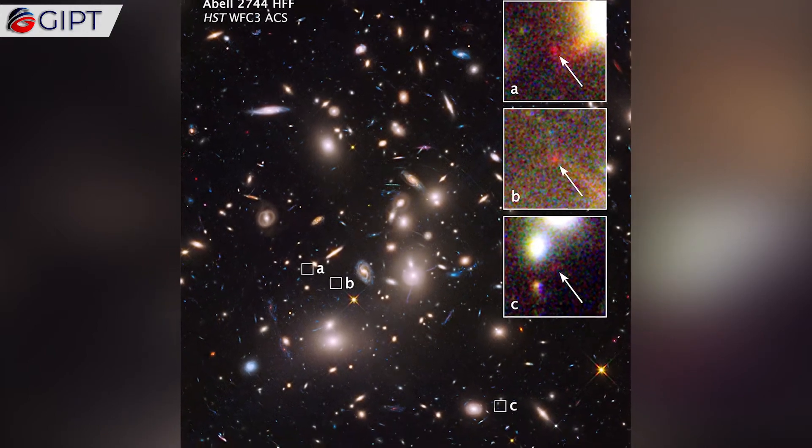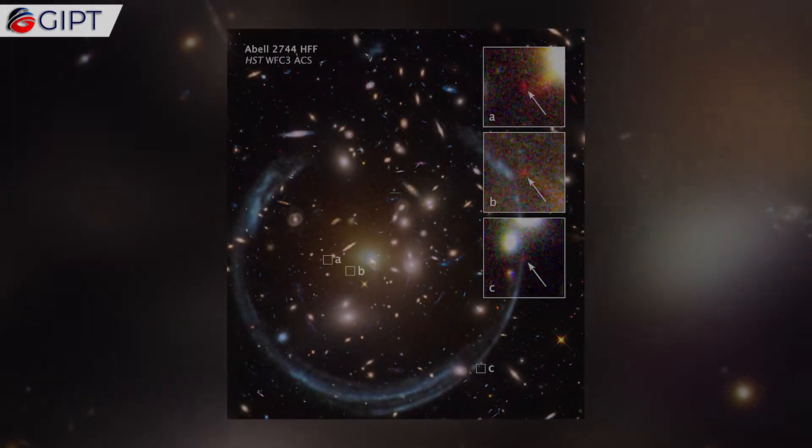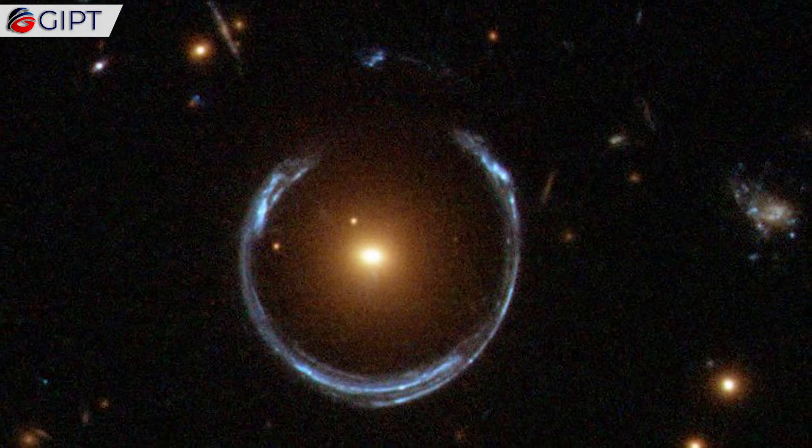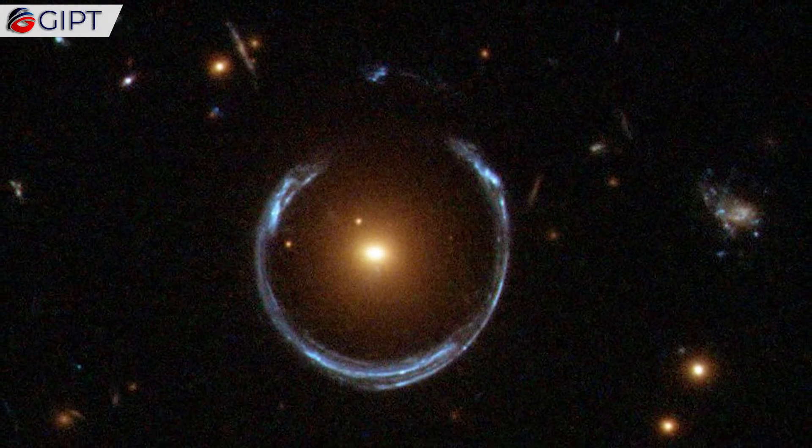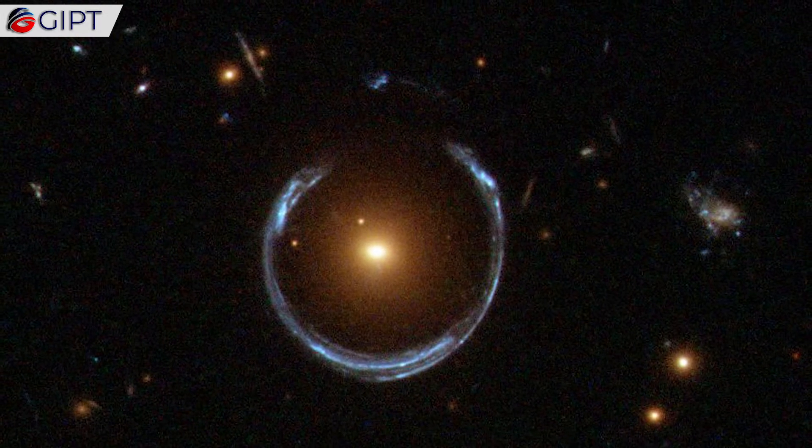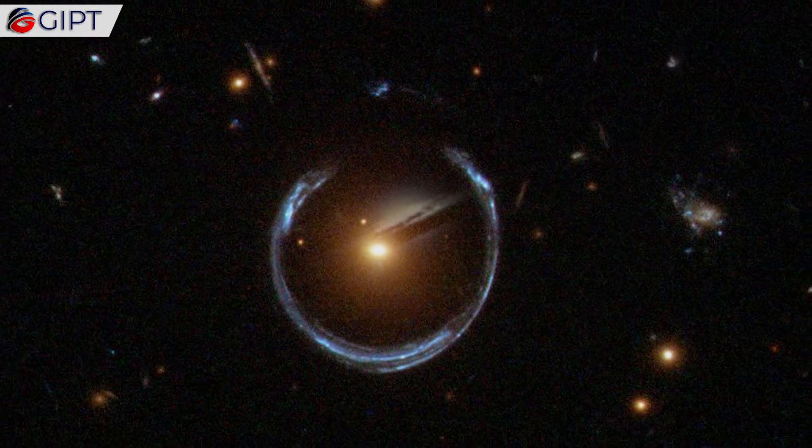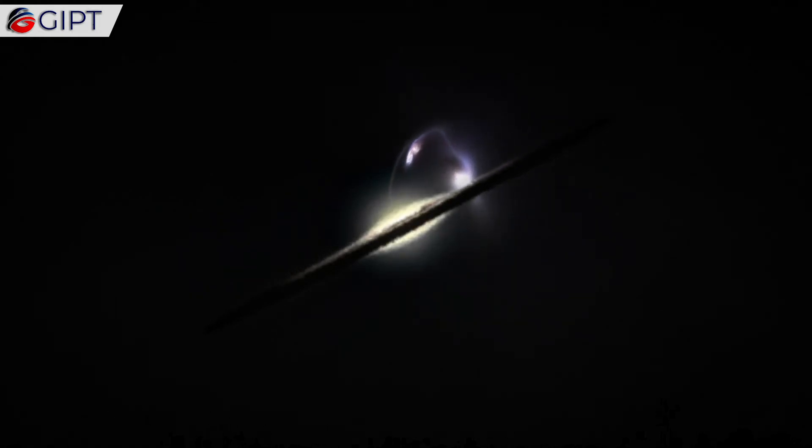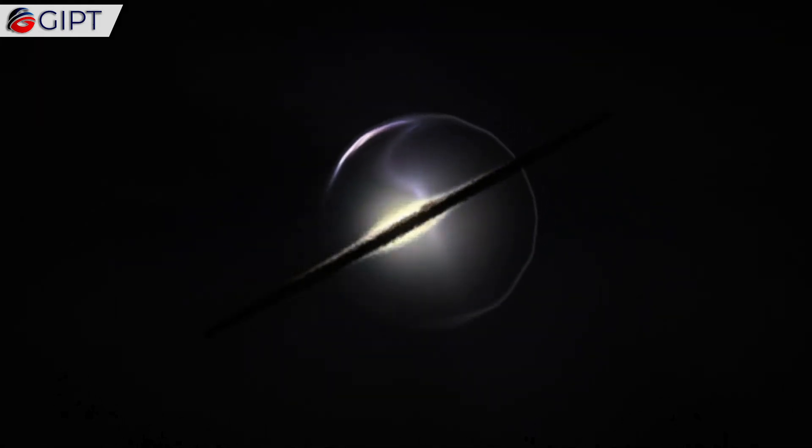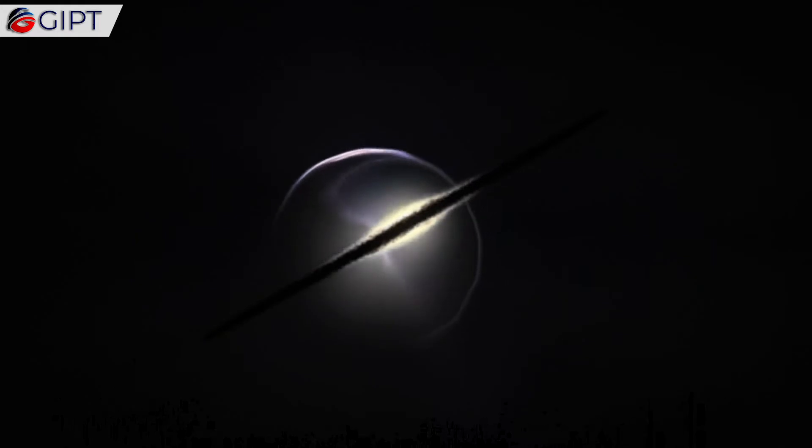But Einstein thought gravitational lensing would be too small to see. He dismissed the idea as mostly useless and didn't bother publishing his findings until a colleague urged him. It was a serious misjudgment on Einstein's part to dismiss the idea, at least initially, considering how important the technique is today. Today we find entire planets, stars, galaxies, clusters, and even the chemical and organic compositions of planets using gravitational lensing.